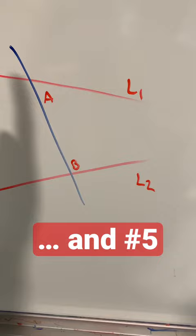If two lines are drawn which intersect a third in such a way that the sum of the inner angles on one side is less than two right angles, then the two lines inevitably must intersect each other on that side if extended far enough.